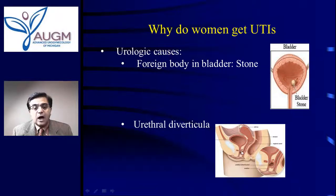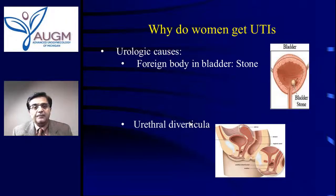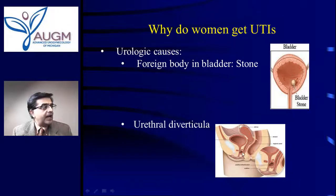Or if there is an outpouching of the urethra called a diverticulum — you may have heard of diverticula in the bowel — very rarely you may have a urethral diverticulum, which is an outpouching where the urine remains stagnant and causes an infection.